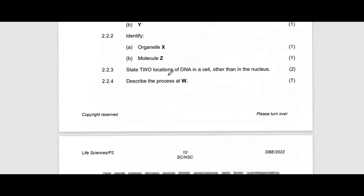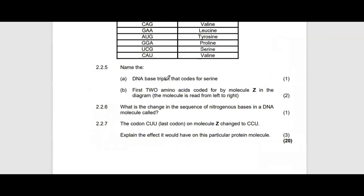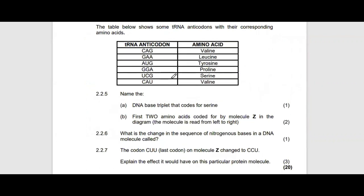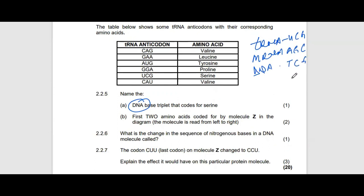The DNA base triplet code for serine: serine on the tRNA is UCG. Convert tRNA anticodon to mRNA codon, then convert to DNA. U→A, C→G, G→C gives the mRNA codon AGC; converting to DNA gives TCG. So the DNA triplet code is TCG — you must convert twice.